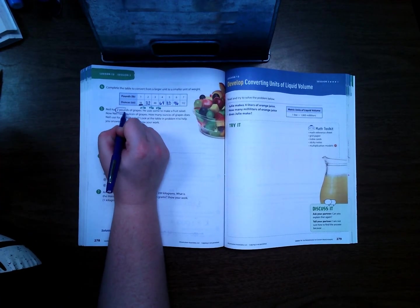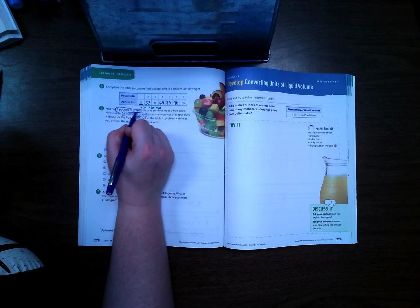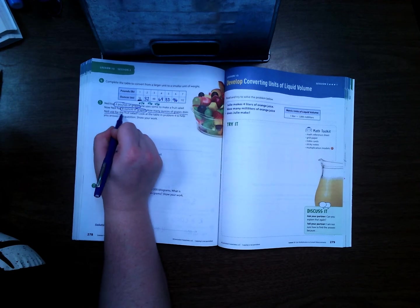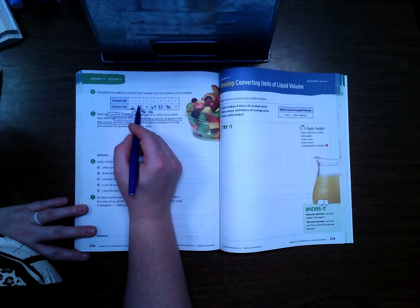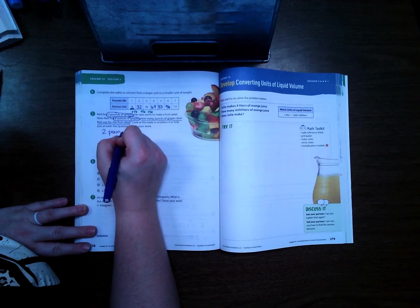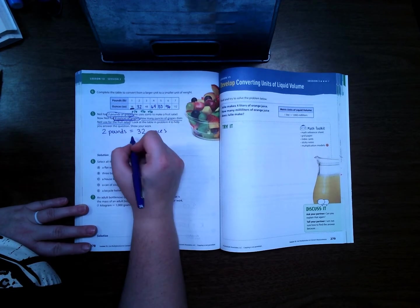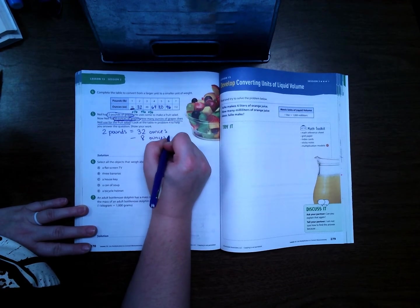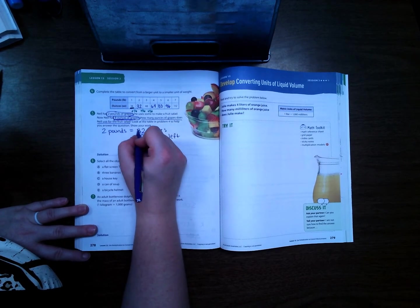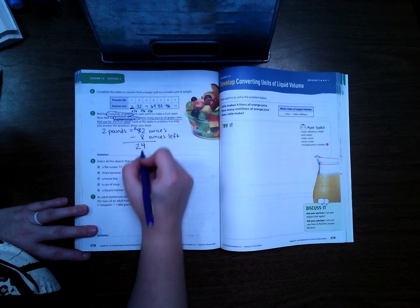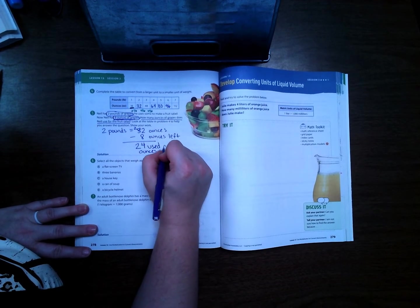Neil has 2 pounds of grapes, he uses some to make a fruit salad. Now he has 8 ounces of grapes. How many ounces of grapes does Neil use for the fruit salad? It says to look at this table to help us solve our problem. If he starts with 2 pounds, we know that 2 pounds is the same thing as 32 ounces. He only has 8 ounces left, so we're going to subtract 8 ounces because that's what he has left. So 32 minus 8, so he used 24 ounces to make a fruit salad.